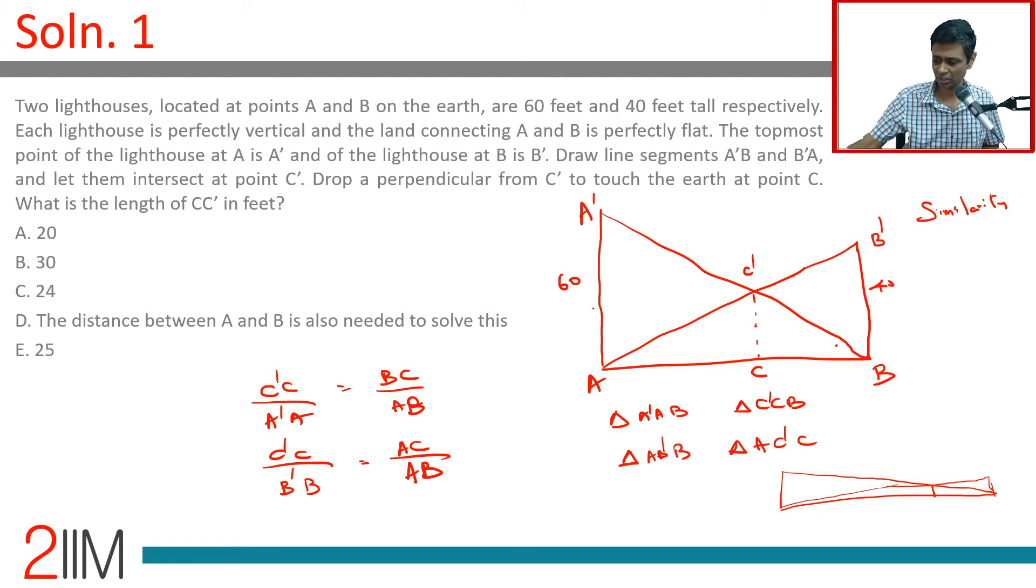And so let's put this, let's call this as h. And so BC by AB we have, and AC by AB we have. Both of them we have. C'C is h. h by 60, h by 40.